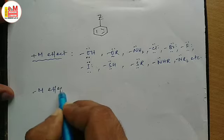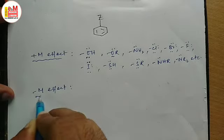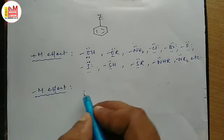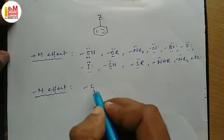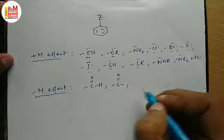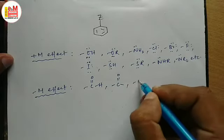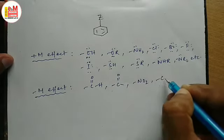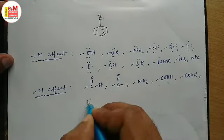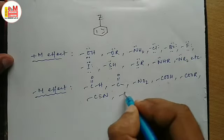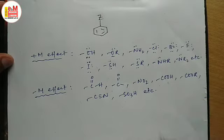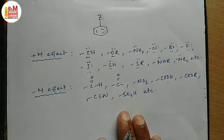Some groups or atoms with minus M effect that drag away the electron density — mainly the pi electron density — from the system are: aldehyde, ketone, nitro, carboxylic acid group, ester group, cyanide group, SO3H group, etc. These are the groups or atoms with minus M effect.